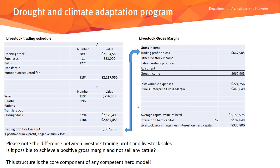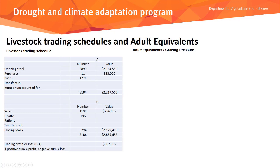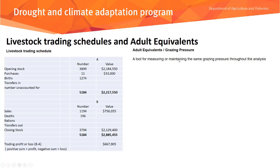When a herd has numbers coming and going during the year, it's important to recognise the grazing pressure applied by that herd. We do that by counting what we call adult equivalents. This is a way of measuring or maintaining the same grazing pressure throughout an analysis where we're looking at herd structural change over time, so we can't inadvertently run more cattle on the same property at a higher grazing pressure.